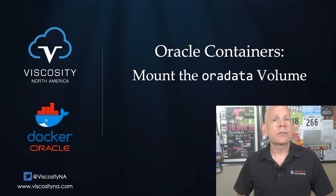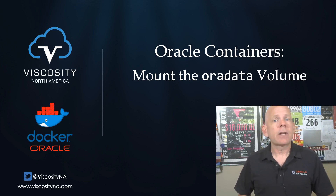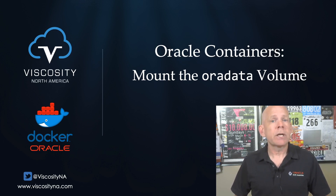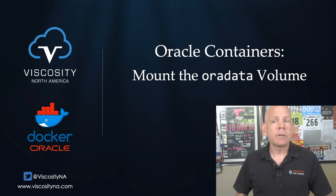In this Oracle on Docker series segment, I'm demonstrating how to use the volume option when creating a database container. The docker run command's dash v flag tells docker to use a directory on your local machine as the mount point for a file system in a container. It's a way to expose host resources to containers without baking them into the image or copying them into the container's file system.